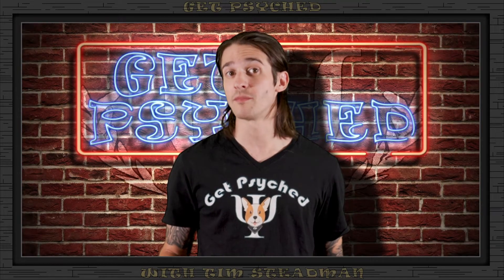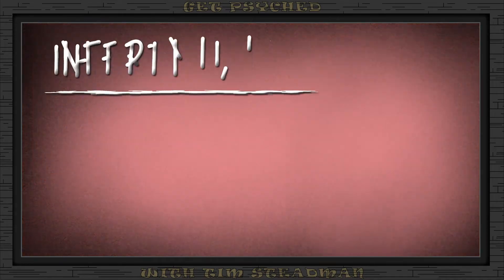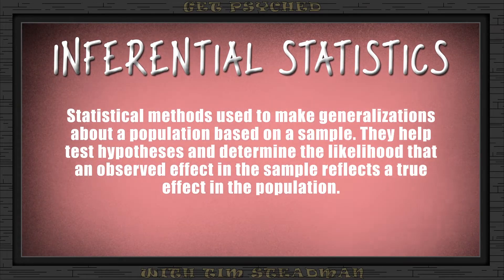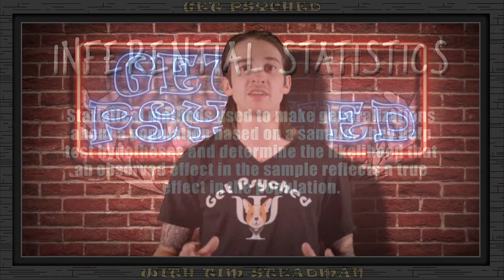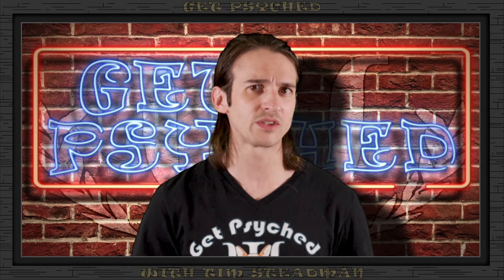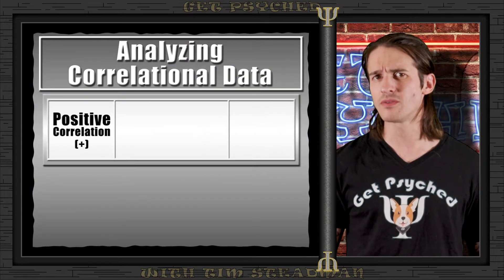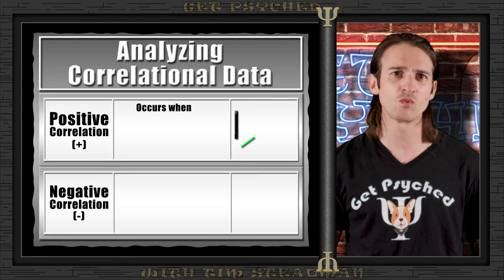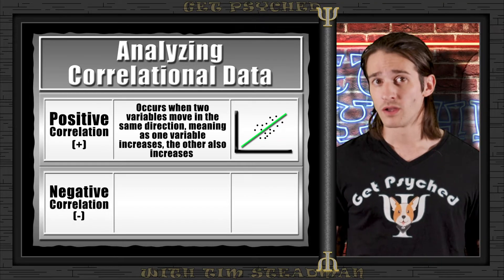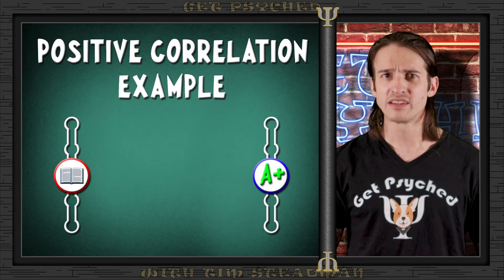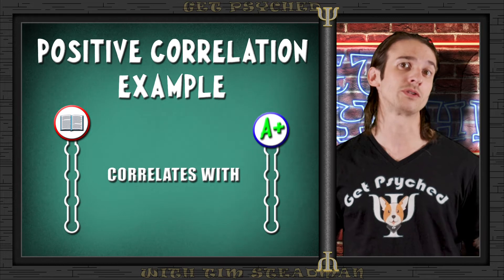While measures of central tendency and variability do a great job describing and summarizing data, what do we do if we want to use our data to make predictions? This is where inferential statistics come into play. Unlike measures of central tendency, inferential statistics go beyond describing data by making predictions or inferences about a larger population, using probability to make judgments about whether an observed relationship is reflective of the broader population. Correlational data can be positive or negative: a positive correlation means that as one variable increases, the other does as well. For example, hours spent studying and test scores typically have a positive correlation — the more you study, the better your test scores tend to be.